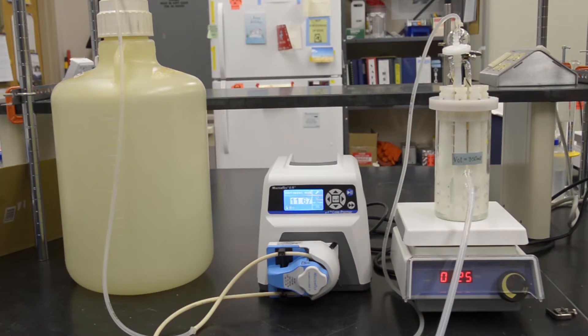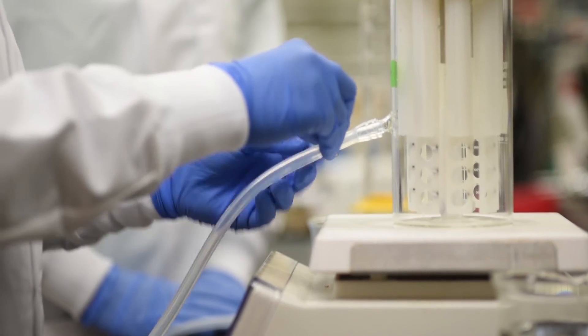To do this, place the reactor on a magnetic stir plate and clamp the effluent tubing.